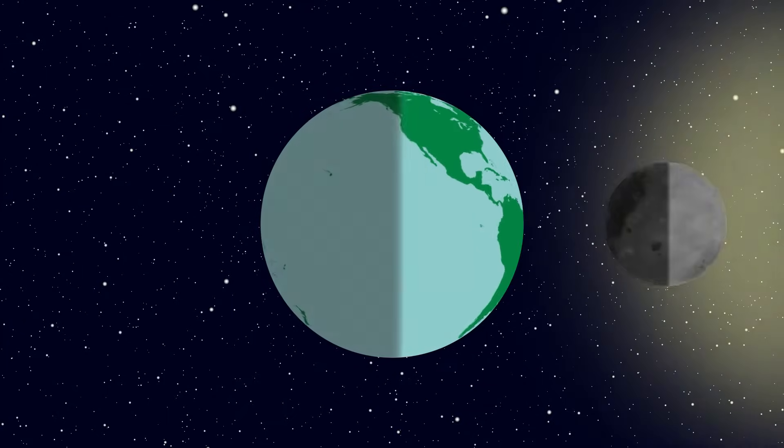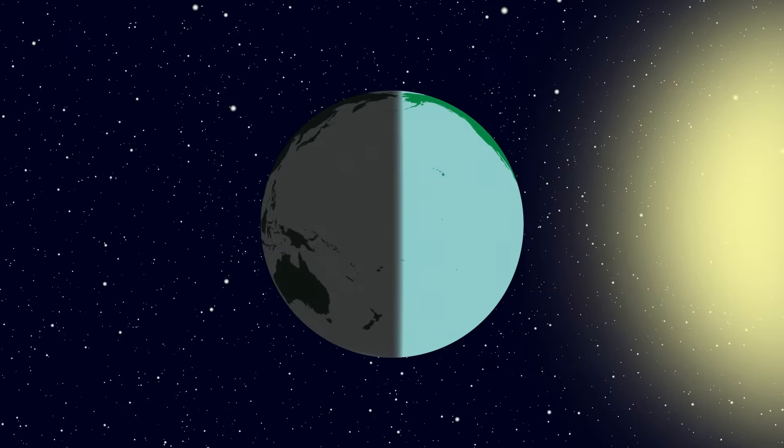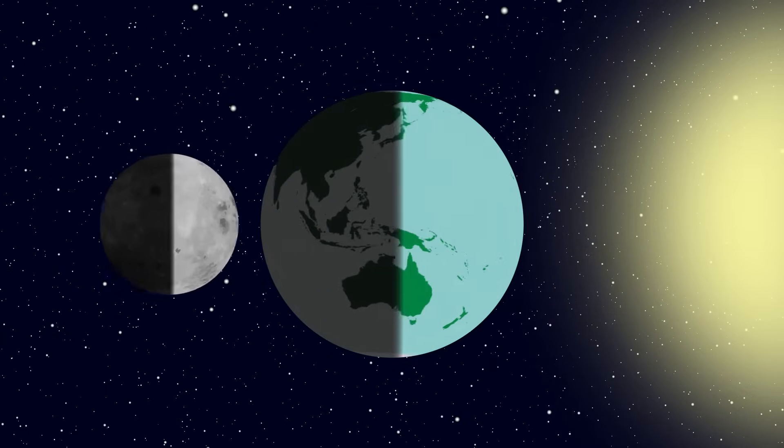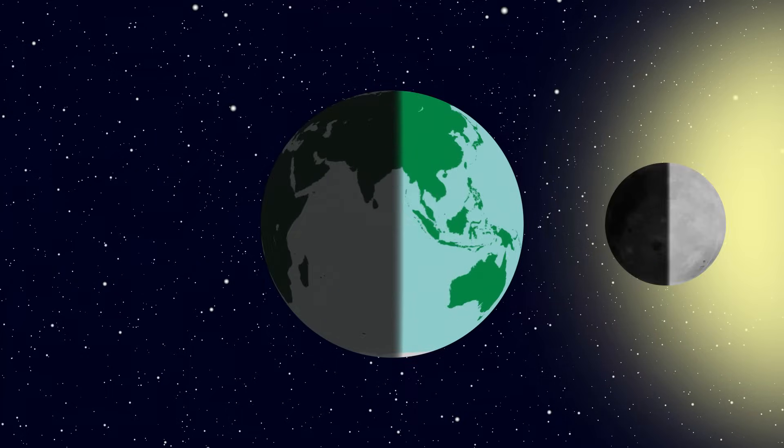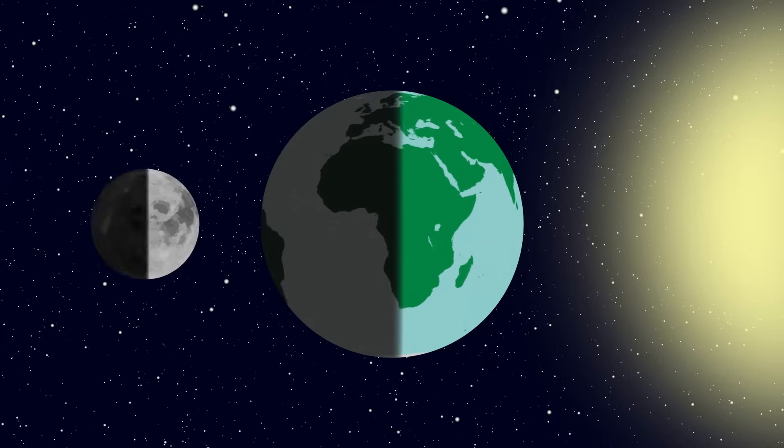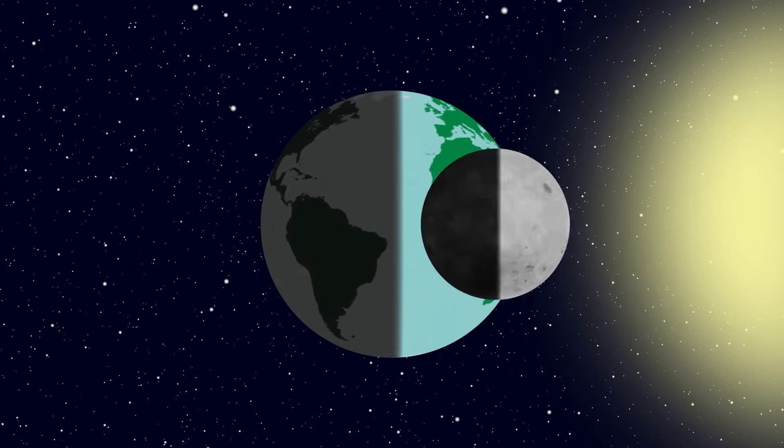Second, half of the moon is always lit by the sun, despite what it looks like from Earth. One half is always lit, and one half is always dark, although it's not always the same side that's lit or in darkness.